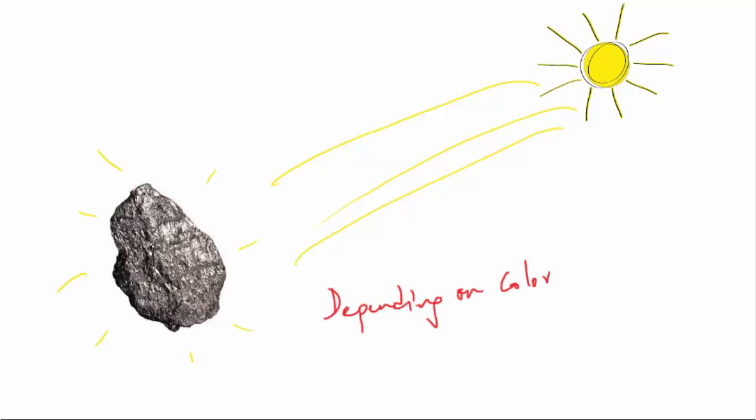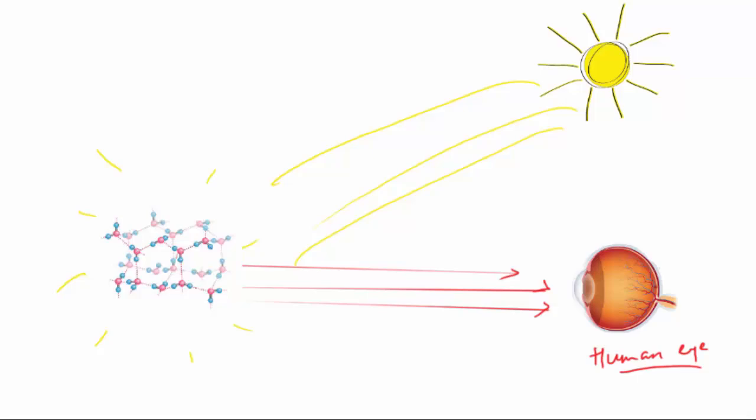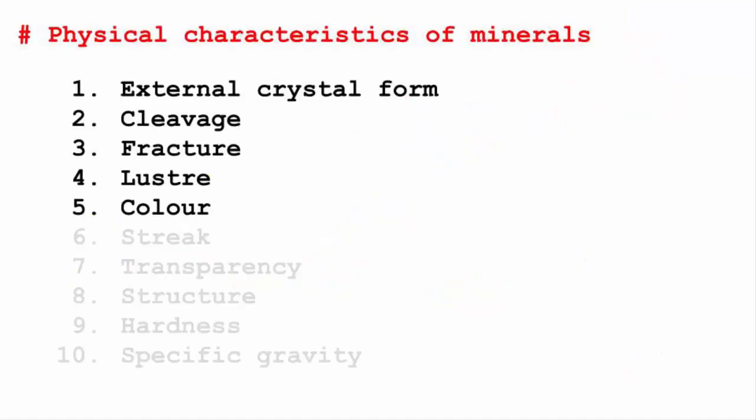Now depending upon the molecular structure of the mineral's crystals, wavelengths of light are reflected accordingly, and that's how we find the color of a mineral to be white, green, red, or yellow.